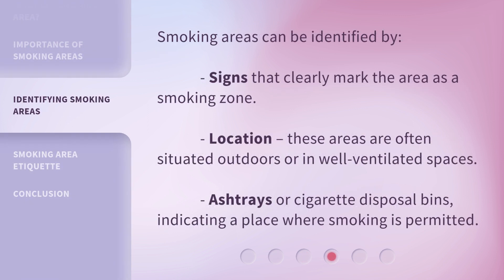Smoking areas can be identified by signs that clearly mark the area as a smoking zone. Smoking areas are often situated outdoors or in well-ventilated spaces. Ashtrays are cigarette disposal bins, indicating a place where smoking is permitted.